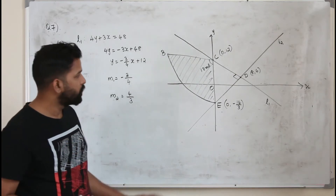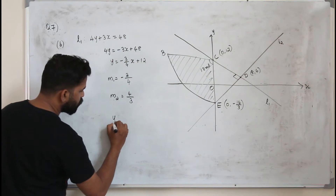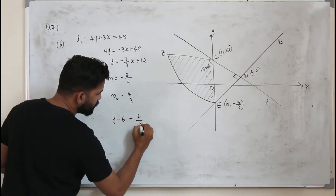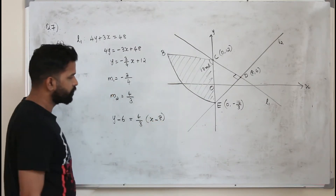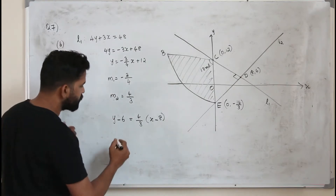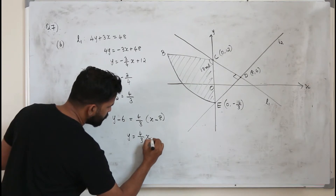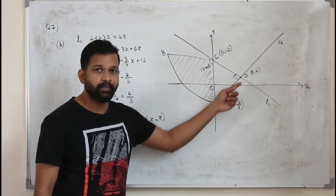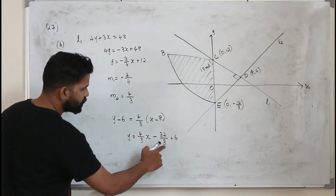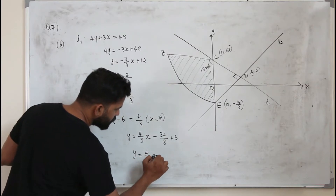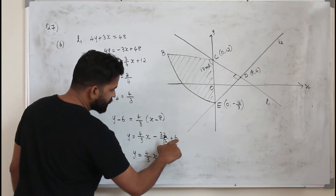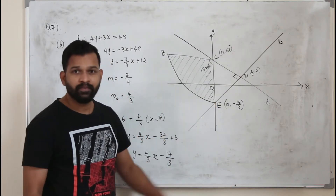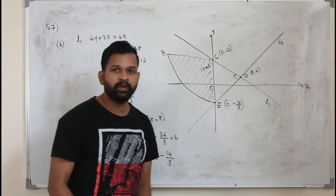You have the slope of L2 as 4 over 3, and L2 passes through (8, 6). Write the equation as y minus 6 equals 4 over 3 times (x minus 8). Expanding: y equals 4 over 3 x minus 32 over 3 plus 6, which simplifies to 4 over 3 x minus 14 over 3. Putting x equals 0 gives the y-intercept as minus 14 over 3. So we have proved the y-coordinate of E is minus 14 over 3.